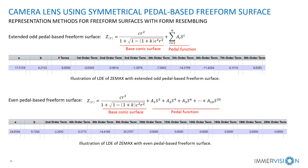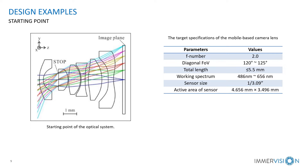This figure shows the design starting point. The camera lens consists of six plastic aspheric elements, including one S-shaped optical element. The stop aperture is located between L1 and L2. The target specifications are shown in this table. We choose a 16-megapixel image sensor. The camera lens is designed to provide a wide-angle field of view, with an F-number of about 2.0 to improve low-light performance.